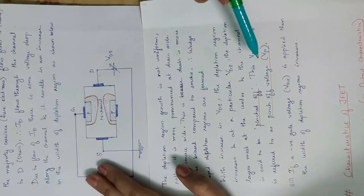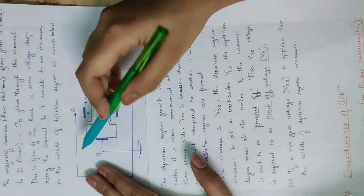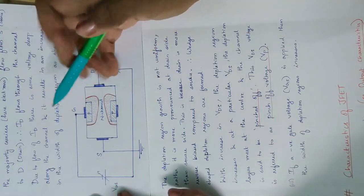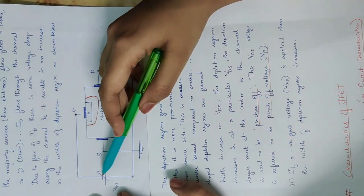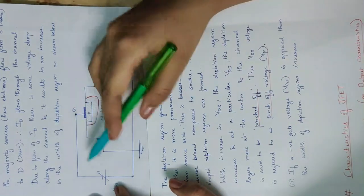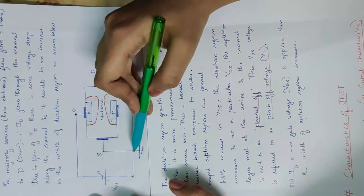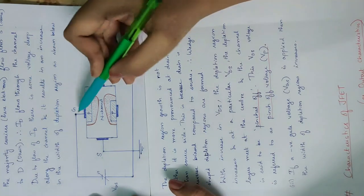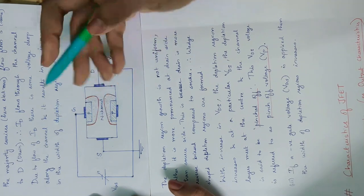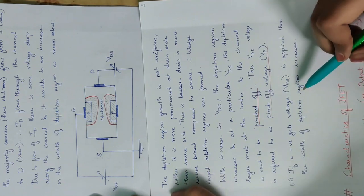Now we apply VDS and also a voltage at the gate-source. Suppose we apply a negative gate voltage — that is, a negative VGS. When we apply a negative gate voltage, we increase the reverse bias, and the width of the depletion region increases further.